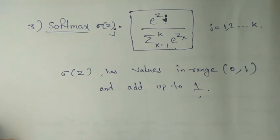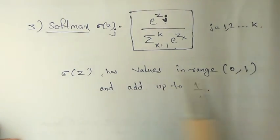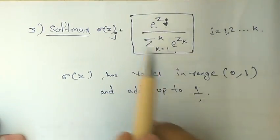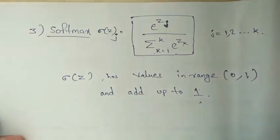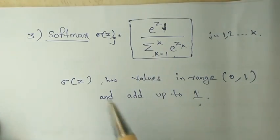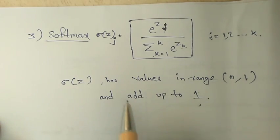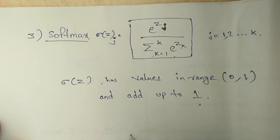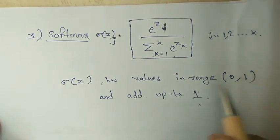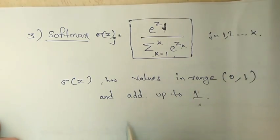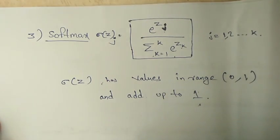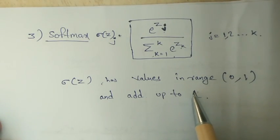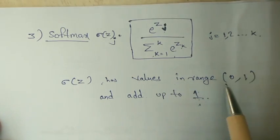Another activation function is the softmax function. In the softmax function, the value lies between 0 and 1, but the formula is different. When we apply the softmax function, we calculate the softmax for every output node and get a value between 0 and 1. When we sum all the output nodes after applying the softmax function, the sum comes to be 1. That is, at every node the range is from 0 to 1, and the sum of all the nodes will be 1.